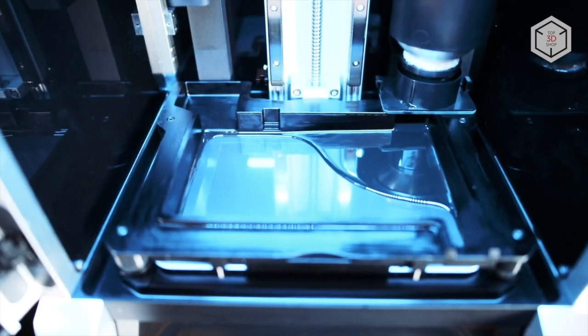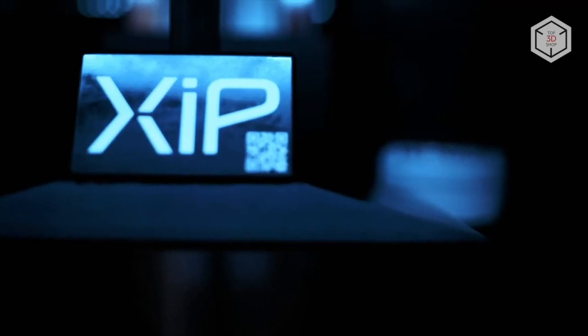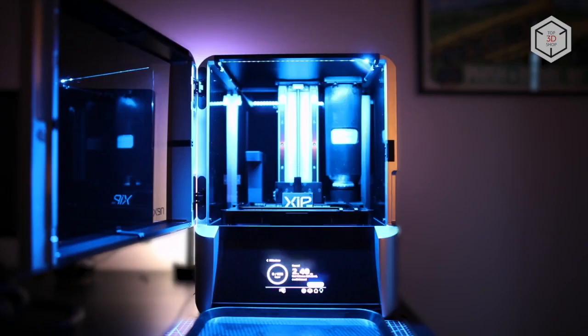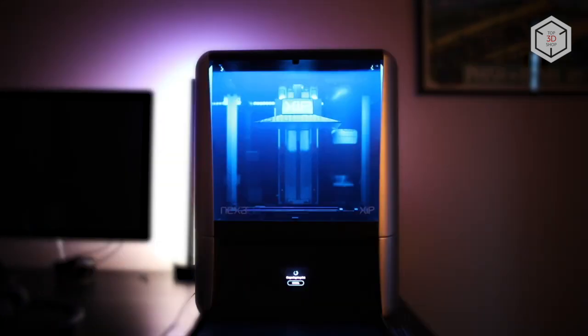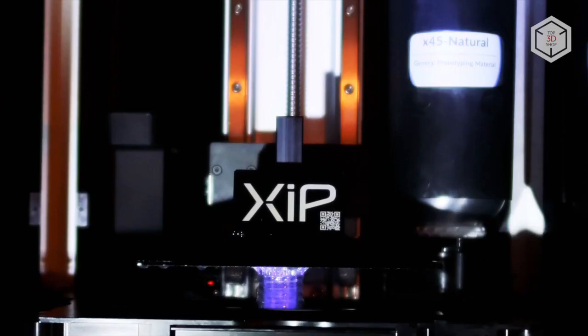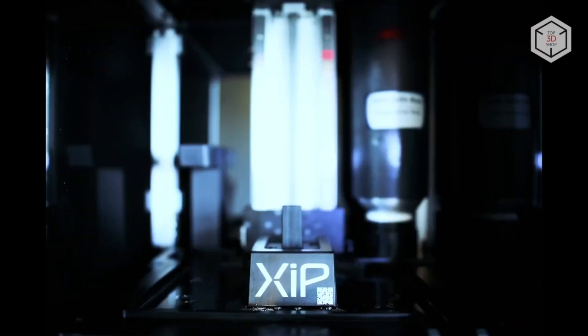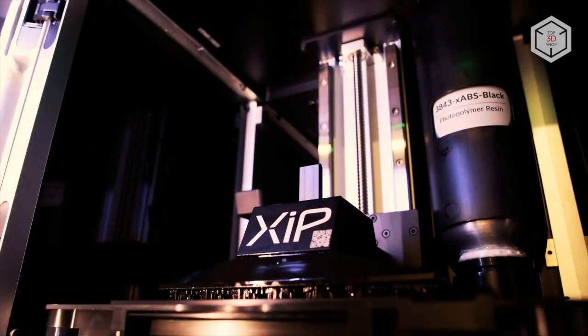The unit sports a modular 9.3-inch 4K monochrome LCD screen and advanced UV light engine ensuring uniform light exposure thus delivering consistent accurate prints. The build volume of the zip is 195 by 115 by 210 millimeters. The machine can print layers at the minimum height of 50 microns. It is a completely open material system so you are free to use compatible resins by any manufacturer.